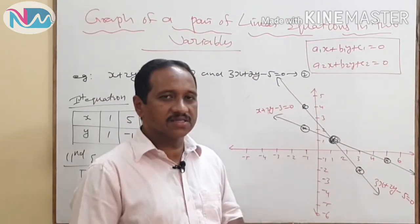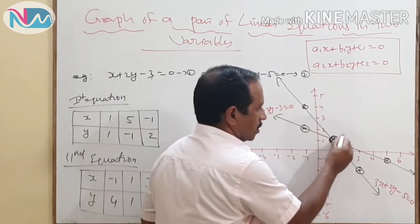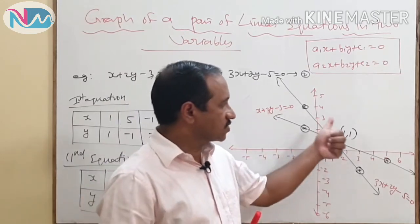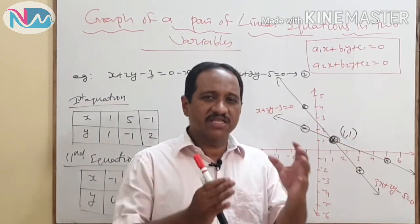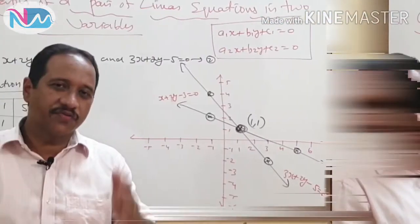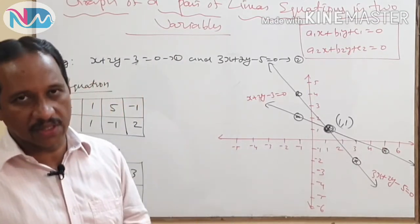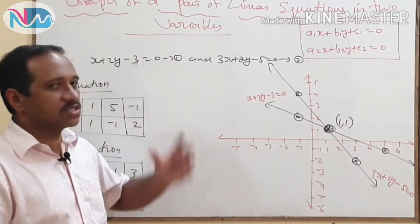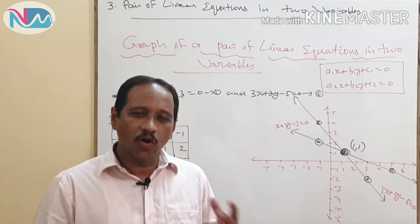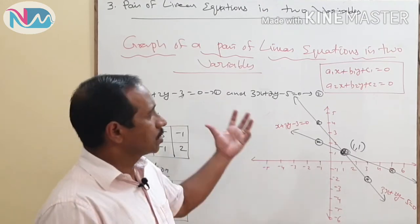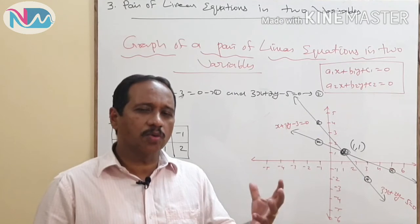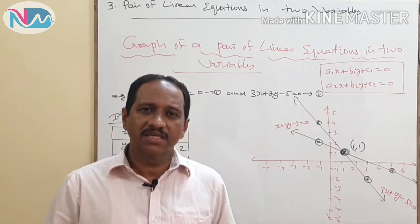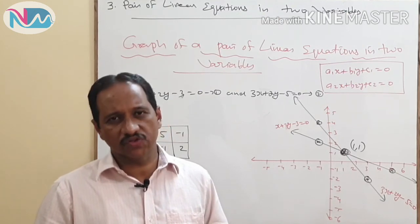You can see that the two straight lines intersect at the point (1, 1). That means the point at which the two straight lines intersect has x coordinate 1 and y coordinate 1, which is the solution of both equations. So if you draw the graphs of a pair of linear equations in two variables, they will intersect at a point whose coordinates are the solution of the two equations. I hope you now have a basic concept about a pair of linear equations in two variables, the standard form, the solution, and the graphical representation.